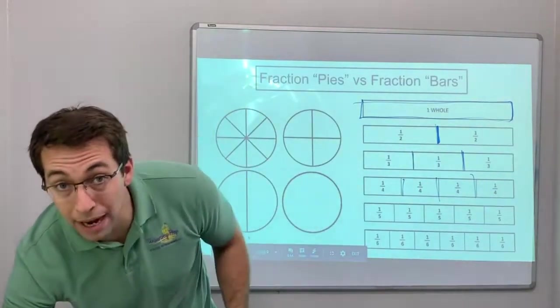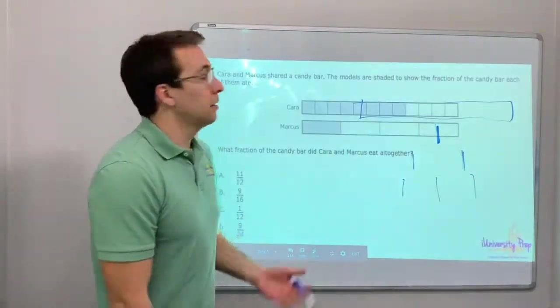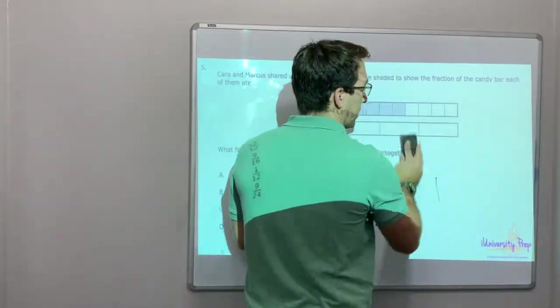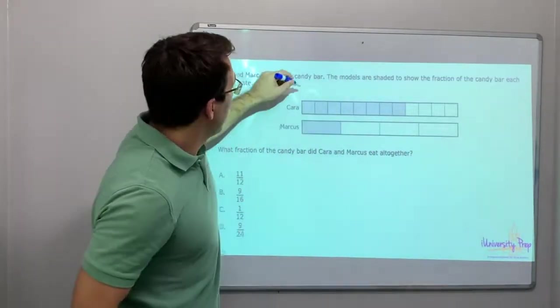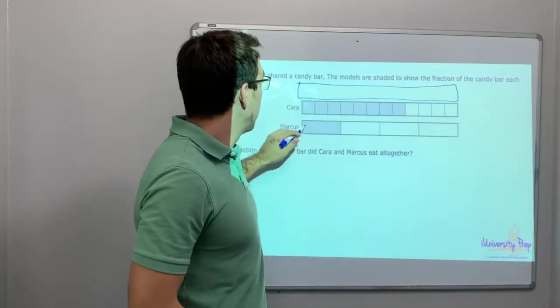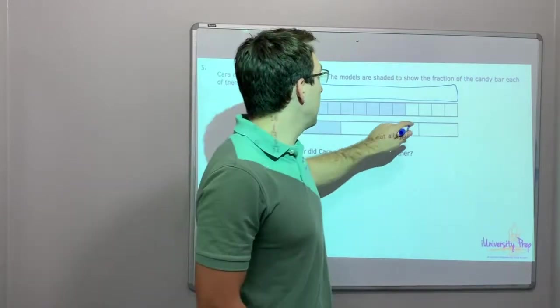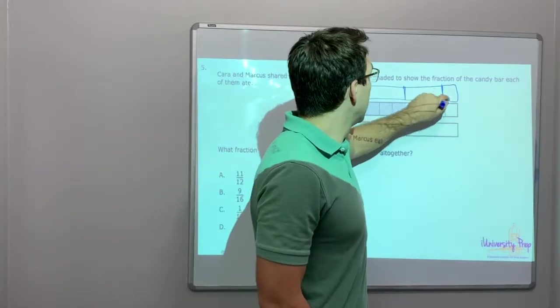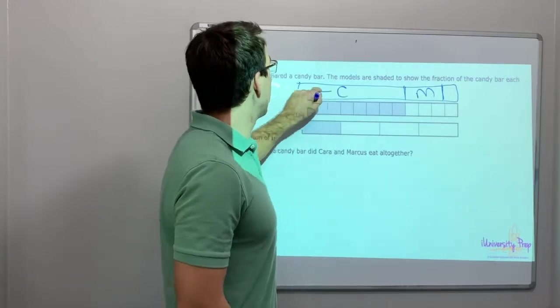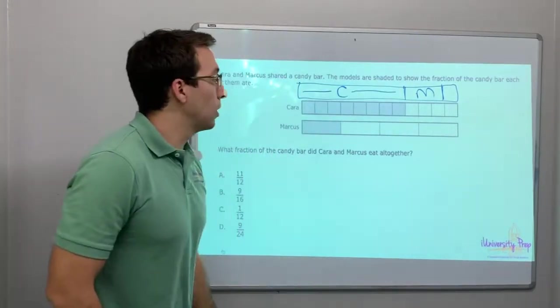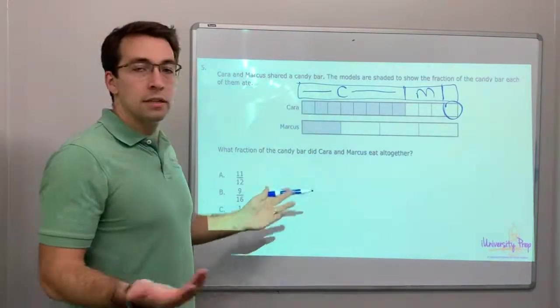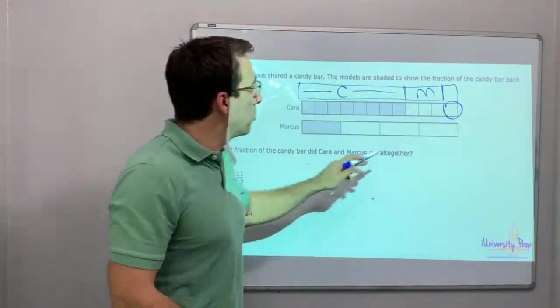Let's go back a slide. These are fraction bars. That's all they are. So we could say, here is one whole, right? Marcus ate three, so he ate right here. This is M for Marcus, and this is C for Kara. What's left? Only one square out of the 12 is not eaten. Isn't that cool?